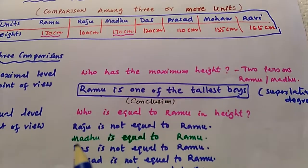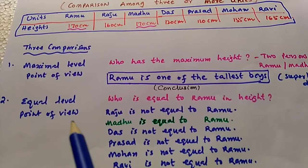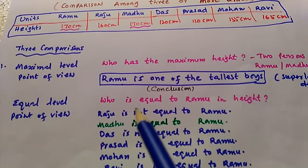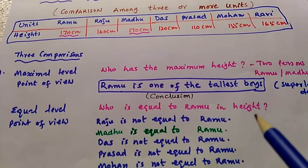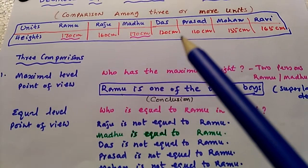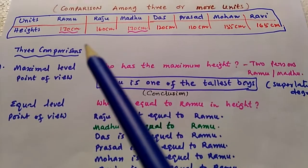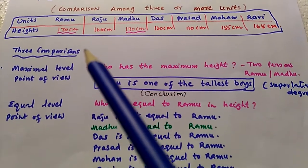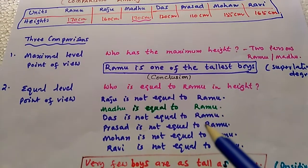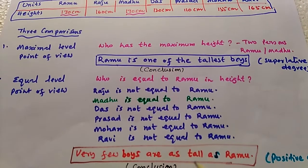From the equal level point of view, we ask: who is equal to Ramu in height? Ramu is not equal to Raju, Das, Prasad, Mohan, or Ravi — but Ramu is equal to Madhu. So the concluding sentence is: very few boys are as tall as Ramu.